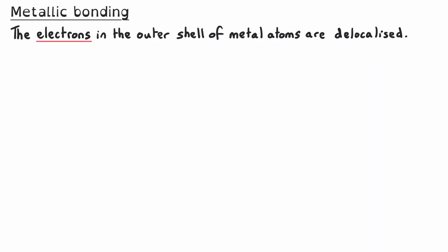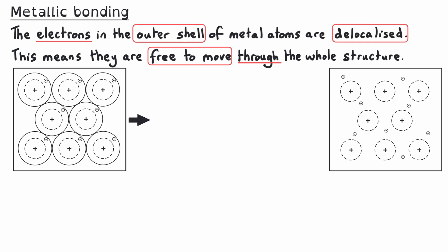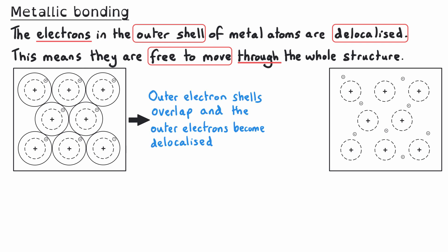The electrons in the outer shell of metal atoms are delocalized. This means they are no longer confined to their shell and are free to move through the whole structure. You can see this from the two diagrams shown here. On the left, eight metal atoms are shown with their outer electrons and outer electron shell as a solid circle. On the right, that outer shell has been removed because all those outer shells are merging together, and the electrons that were in them have now been delocalized — they are free to move.